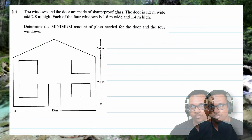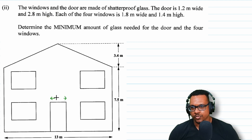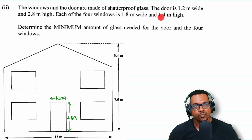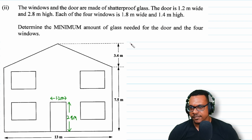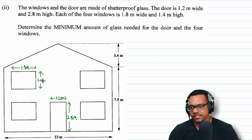For part A part 2, the windows and door are made of shatterproof glass. The door is 1.2 meters wide and 2.8 meters high. Each of the four windows is 1.8 meters wide and 1.4 meters high.